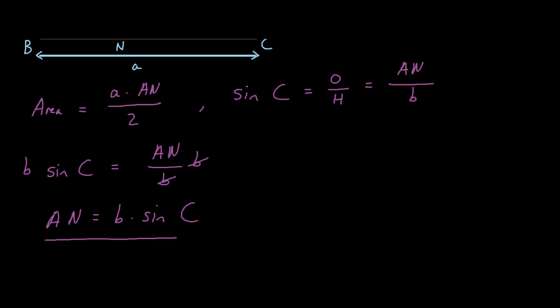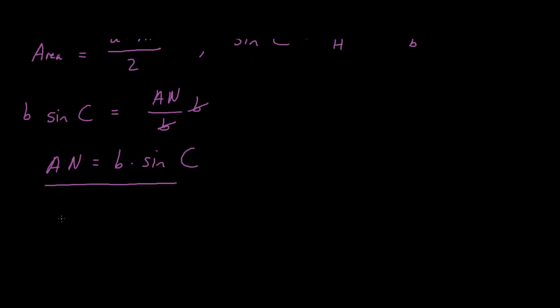Now, we know that the area of the triangle equals A multiplied by AN over 2. So, if we replace this AN here with B multiplied by sine C, we get A multiplied by B multiplied by sine C over 2 equals the area of the triangle.